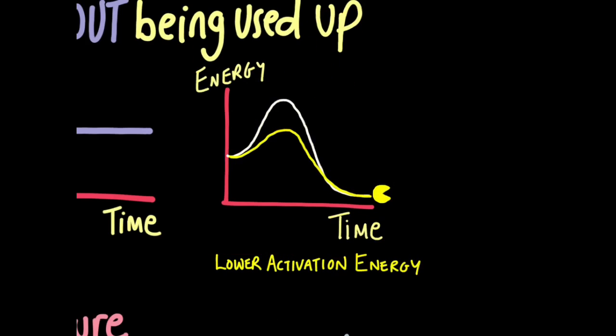What catalysts do is speed up a reaction by lowering the activation energy needed to start the reaction. Normally you'd need to input a large quantity of energy to get a reaction starting, but with a catalyst involved you only need a smaller amount. This is how they speed up reactions. Your body is filled with catalysts called enzymes — that's what makes it possible for the chemical reactions that keep you alive to take place at around 37°C. Without enzymes you'd have to raise your body temperature to much higher temperatures that would kill you.